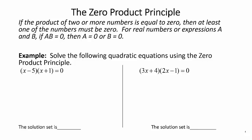As an example, we're going to solve the following quadratic equations using the zero product principle. Now these two examples that I have for you are both already in factored form. We didn't have to actually do the factoring. I just want to highlight how to use this zero product principle once you do have things in factored form. So in this first example, we have the quantity x minus 5 times the quantity x plus 1 equal to zero.